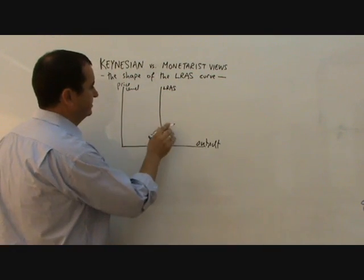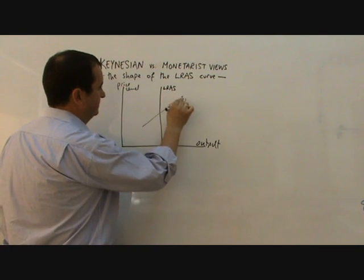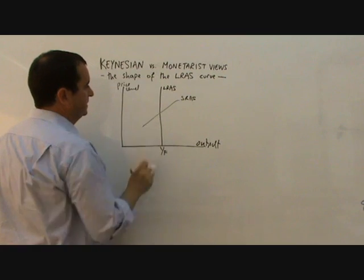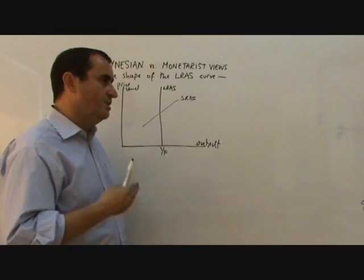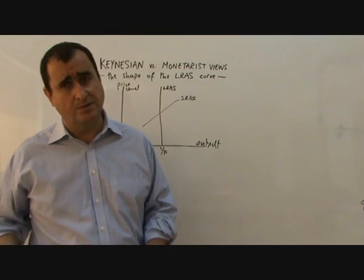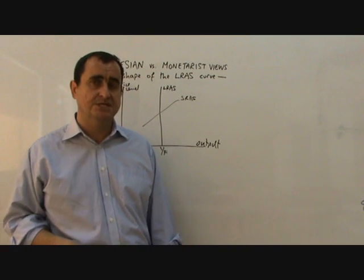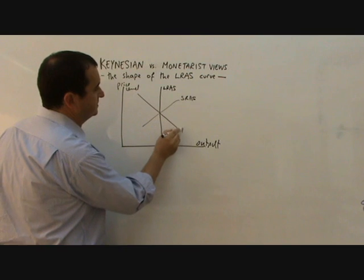OK, there can be a short-run aggregate supply curve, which we can draw in like this. I've probably drawn that a bit steeply. So temporarily we've been knocked off the YF, but workers who are made unemployed will either choose not to supply themselves at lower wages or will lower their wage expectations and take up work.